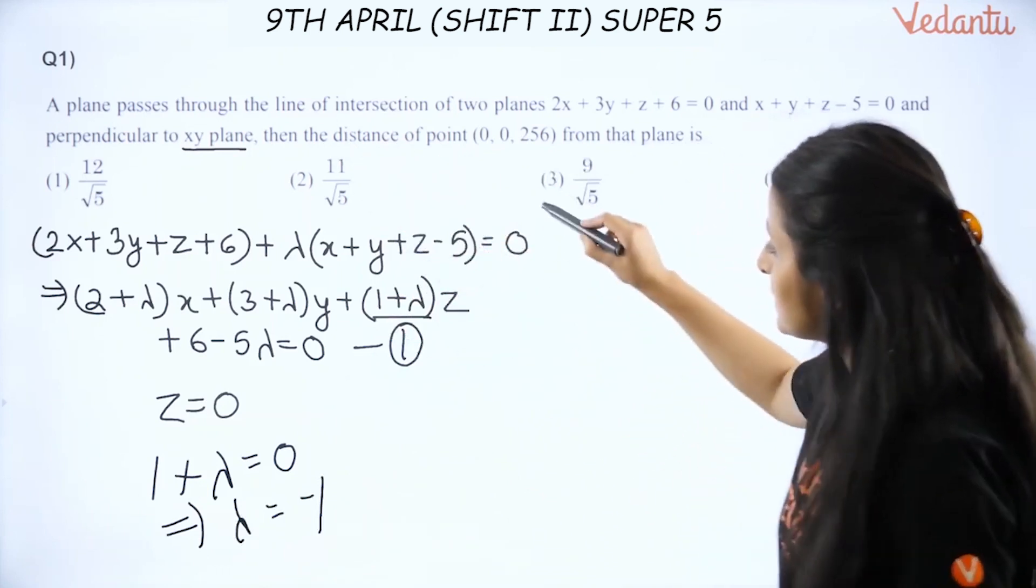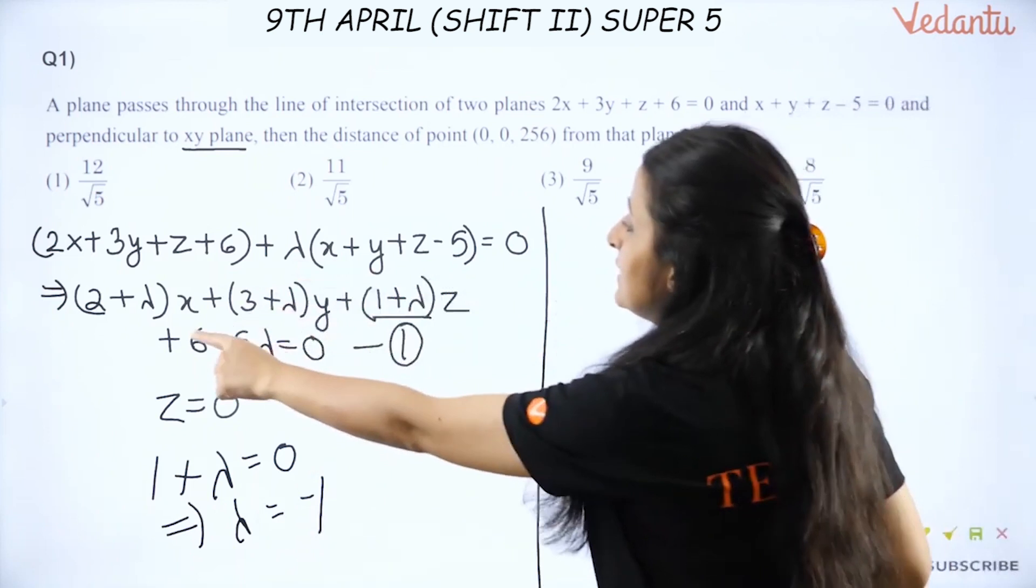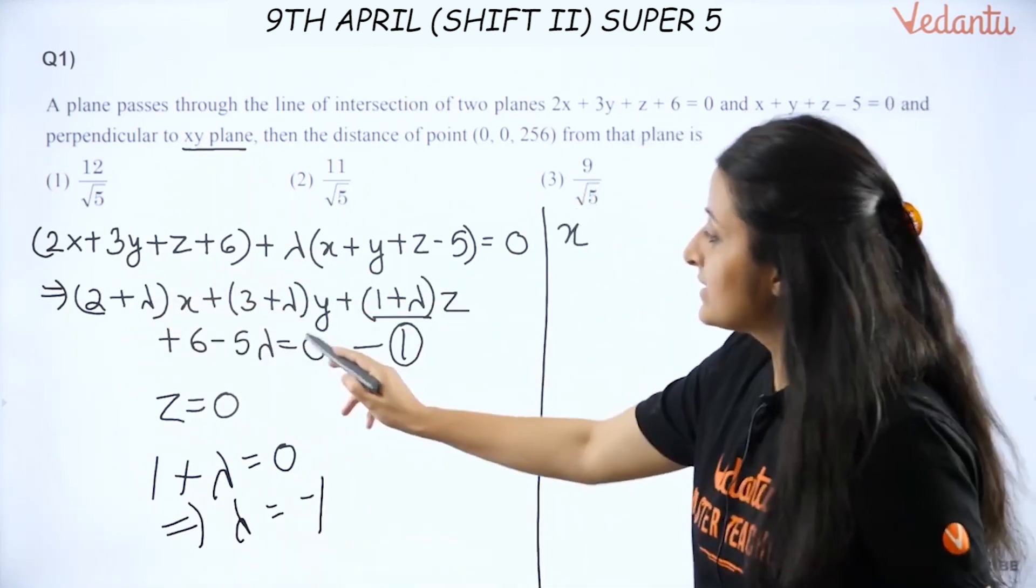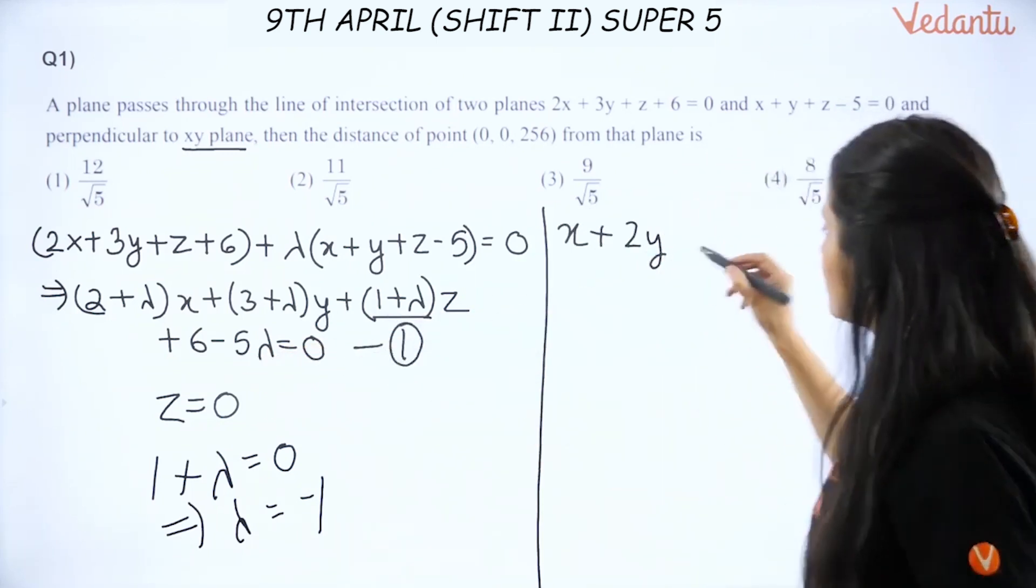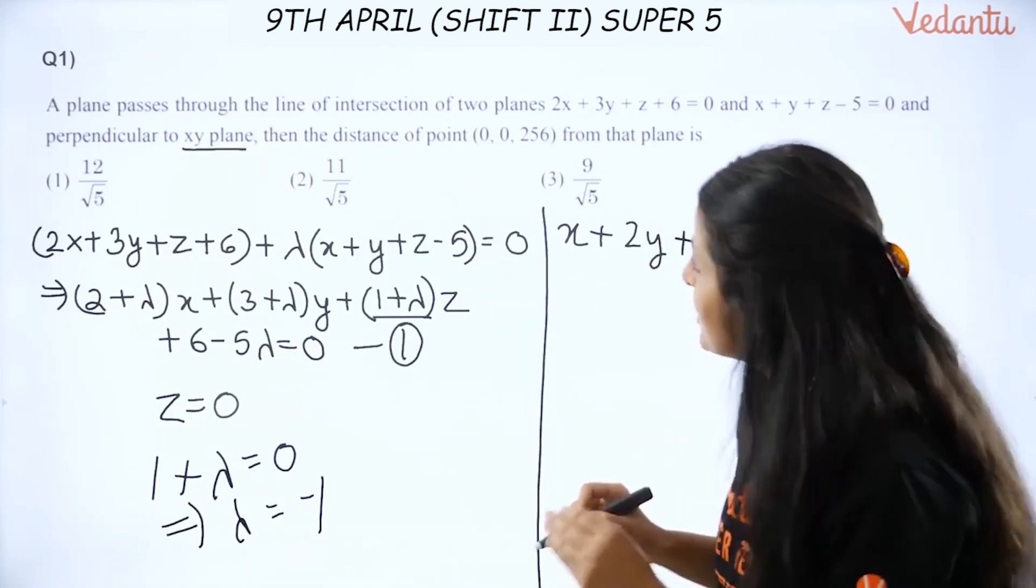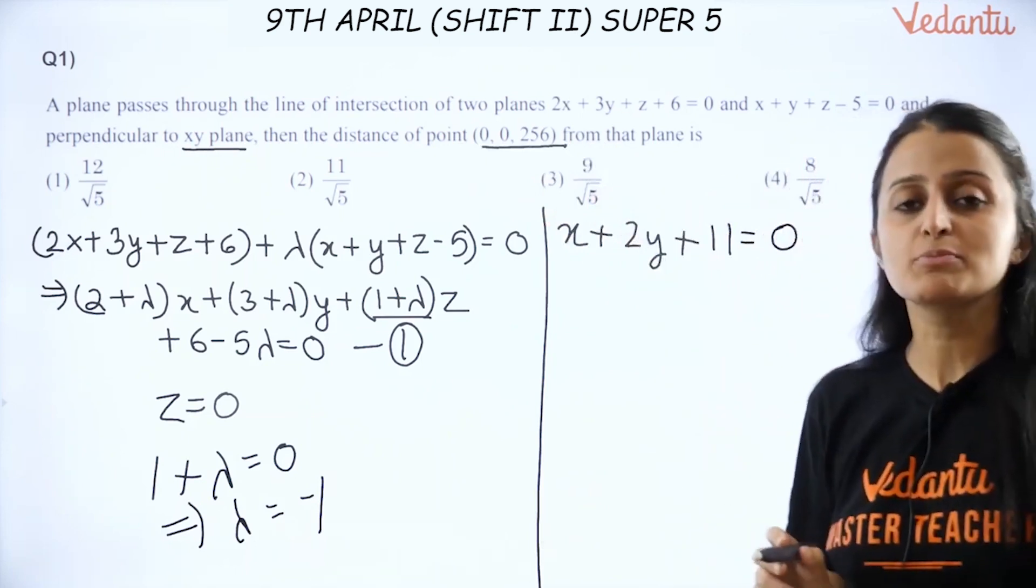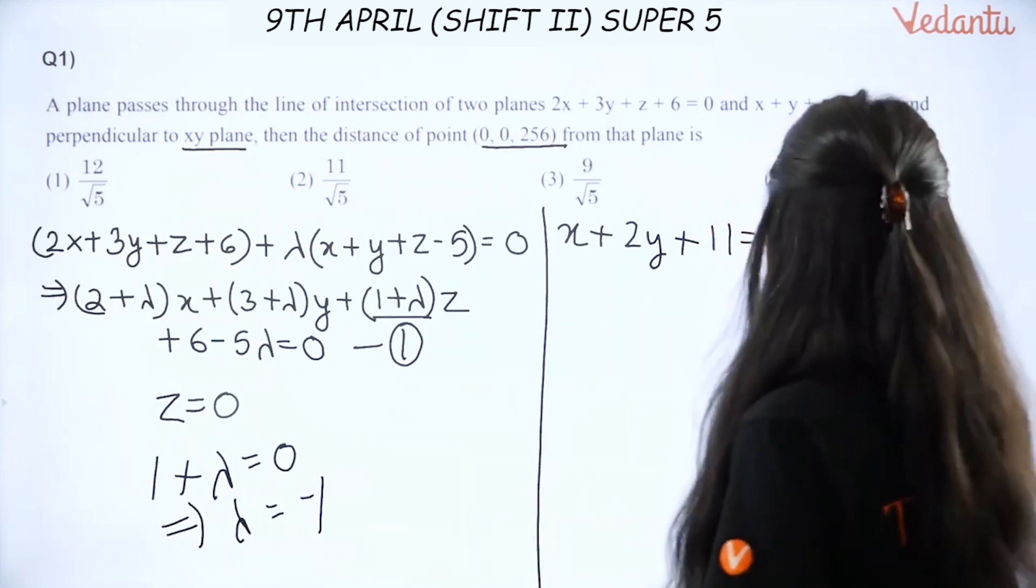So now we make lambda minus 1. Lambda is minus 1 gives me x and here we have plus 2y, and 6 plus 1, so plus 11 equal to 0. Now if we have this equation and you have to find the distance from this point. The distance between a point and a plane is a very simple formula, right?